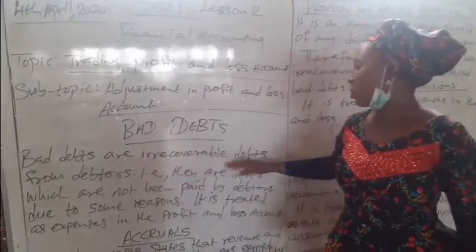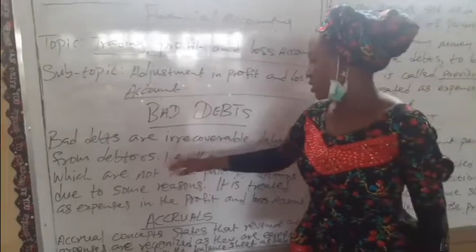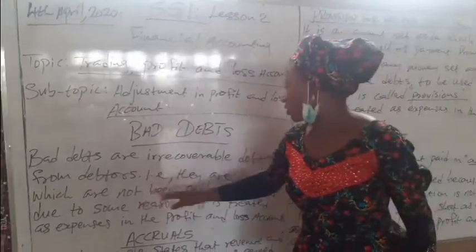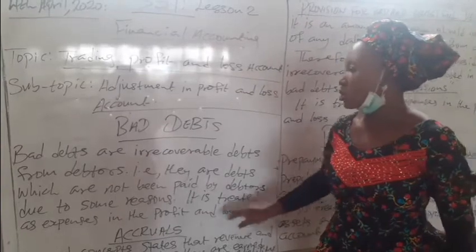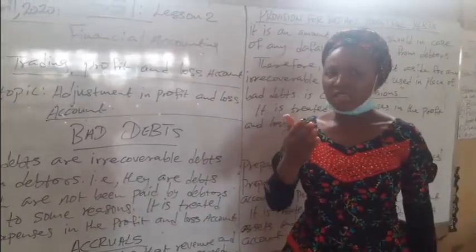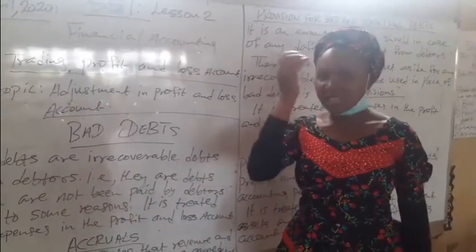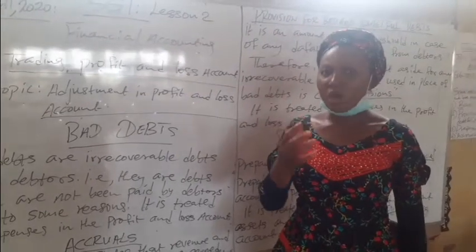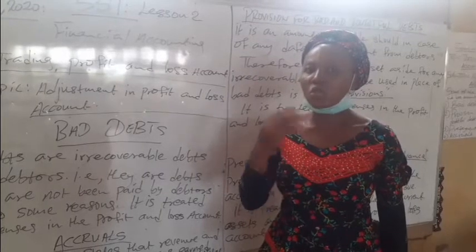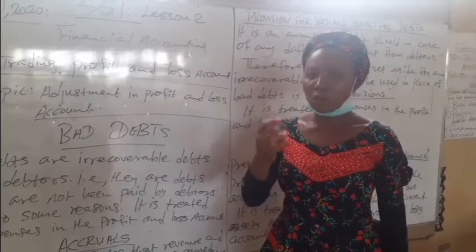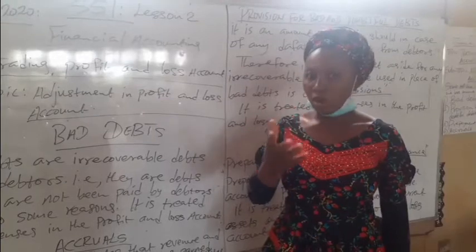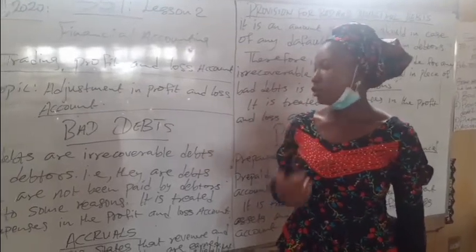Bad debts are irrecoverable debts from debtors — that is, there are debts which are not being paid by debtors due to some reasons. One reason is insanity. There are some customers who owe you but due to insanity or incapacity of the customer, you cannot be able to collect your debt from them.